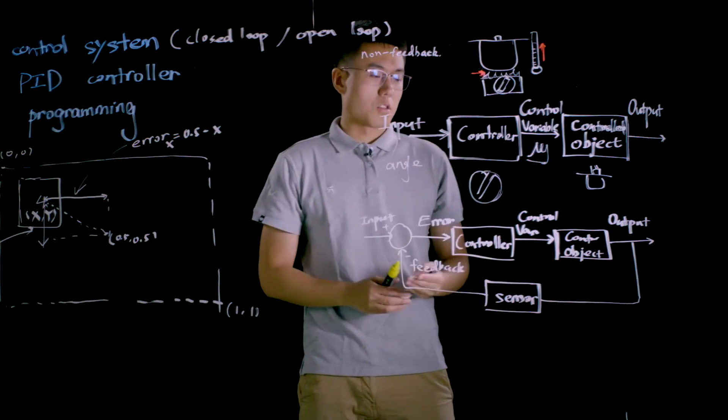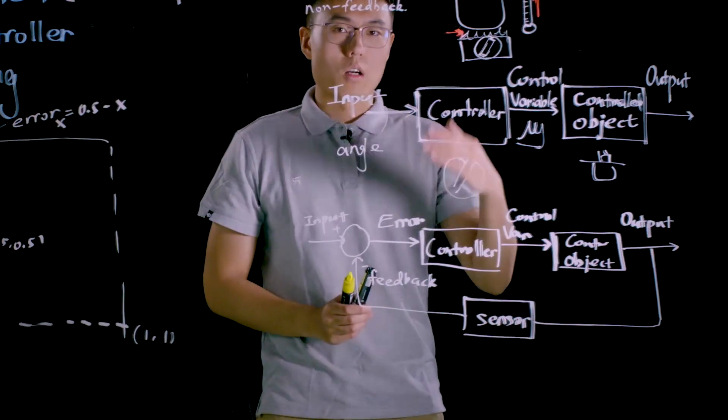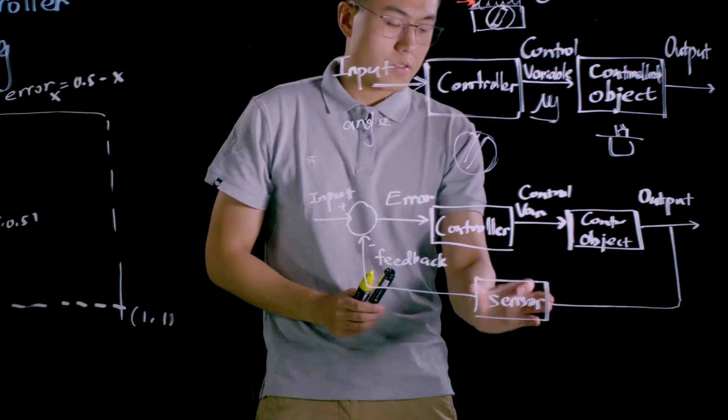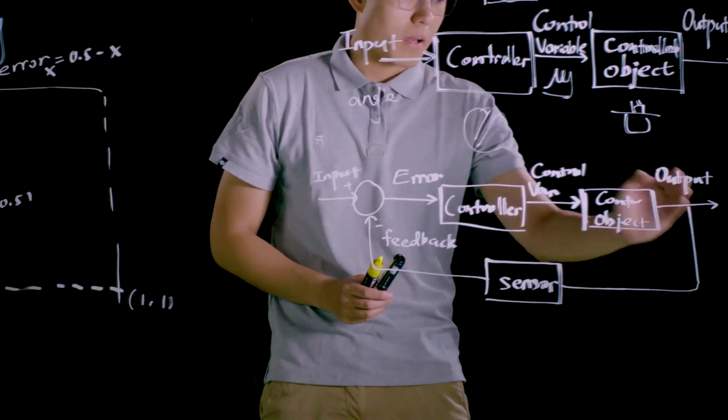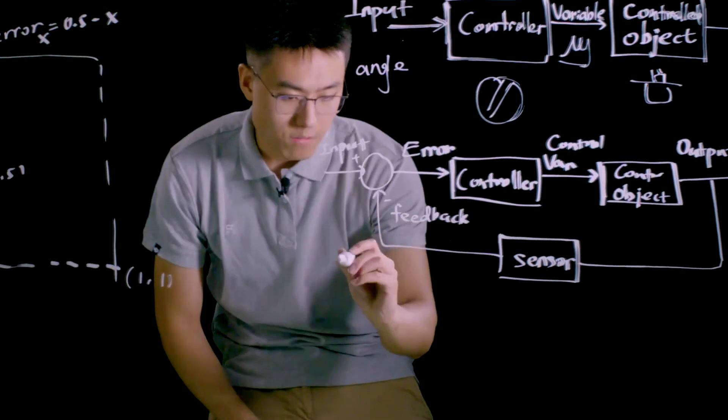Let's take a look at the closed loop control system. Here is a diagram for the typical closed loop control system. Different from open loop control system, there is a sensor over here and it provides a signal path and forms a feedback loop, so it's also called a feedback control system.